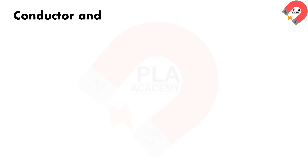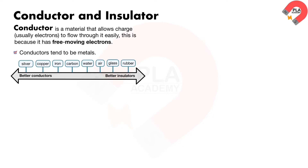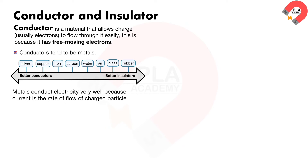Conductors and insulators. A conductor is a material that allows charge, usually electrons, to flow through it easily, because it has free-moving electrons. Conductors tend to be metals. An example of materials ordered from best conductor to poorest conductor is shown in the diagram. Metals conduct electricity very well because current is the rate of flow of charged particles. The more easily electrons are able to flow, the better the conductor.